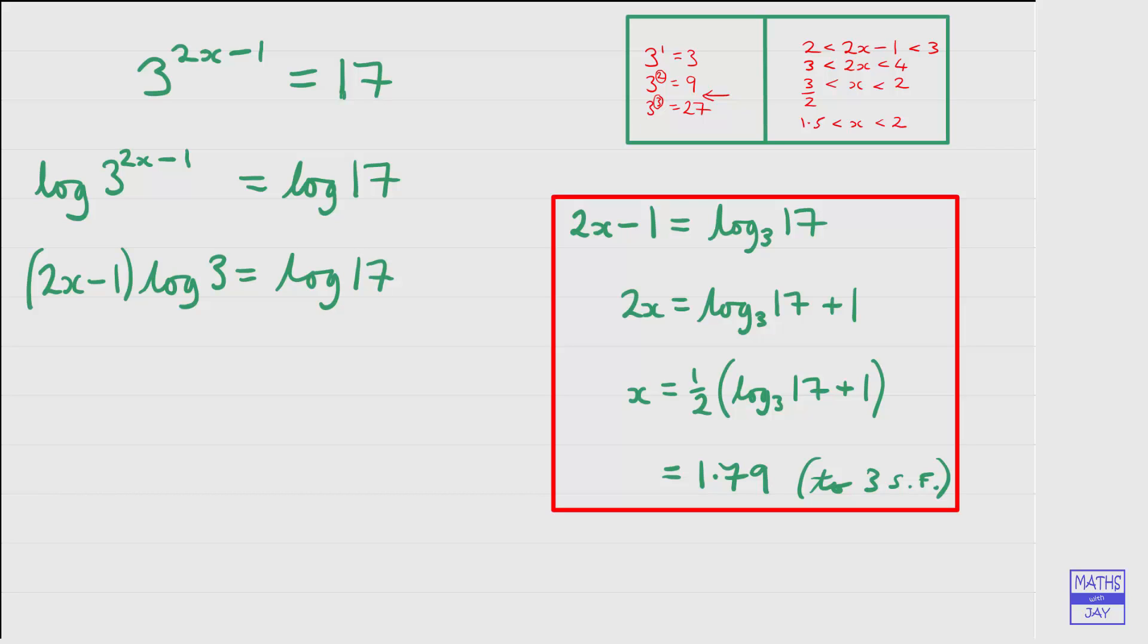And then all we need to do is to isolate the x. So first of all, we'll divide both sides by log 3 to get that 2x minus 1 is log 17 divided by log 3. And then we'll add 1 to both sides and divide by 2. So we end up getting that x is a half of log 17 divided by log 3 plus 1.